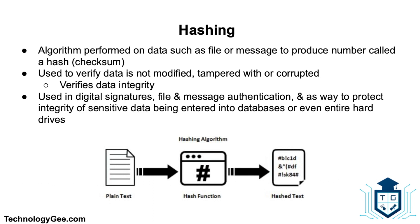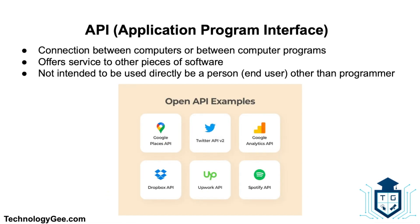Next is hashing. This is an algorithm performed on data such as a file or message to produce a number called a hash, which is also sometimes called a checksum. The hash is used to verify that data is not modified, tampered with, or corrupted. In other words, hashing allows you to verify that data has maintained its integrity. Hashing is used in digital signatures, file and message authentication, and as a way to protect the integrity of sensitive data such as data being entered into databases or entire hard drives.